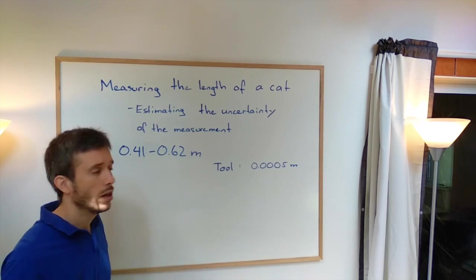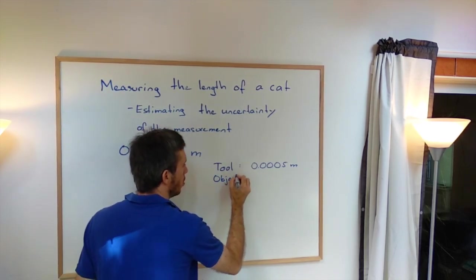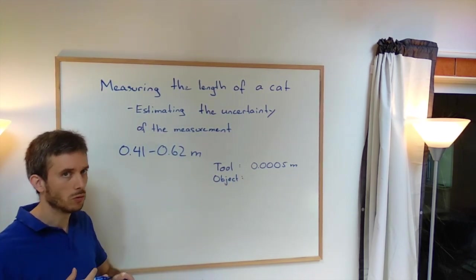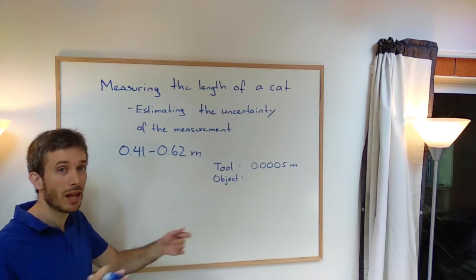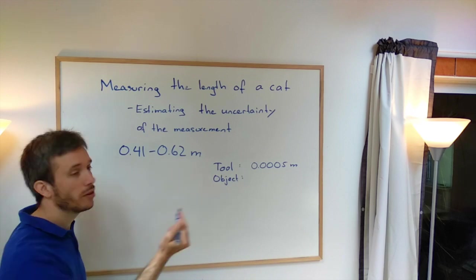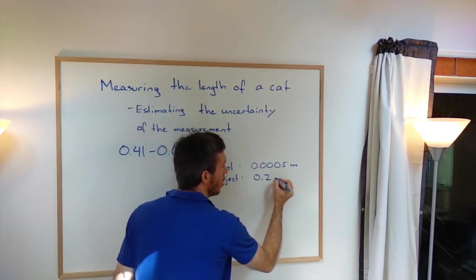Next one is the object that I'm measuring. Does it have a good size? Like my cat. Do I measure the whiskers? There is hair. Do I measure the hair or not? Do I measure the tail or not? So just for the tail, I think I could have been easily off in this case by 20 centimeters.